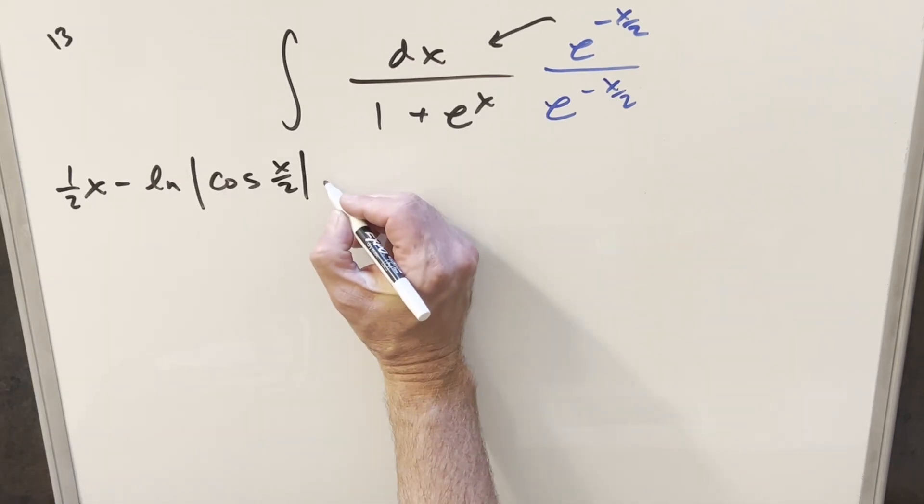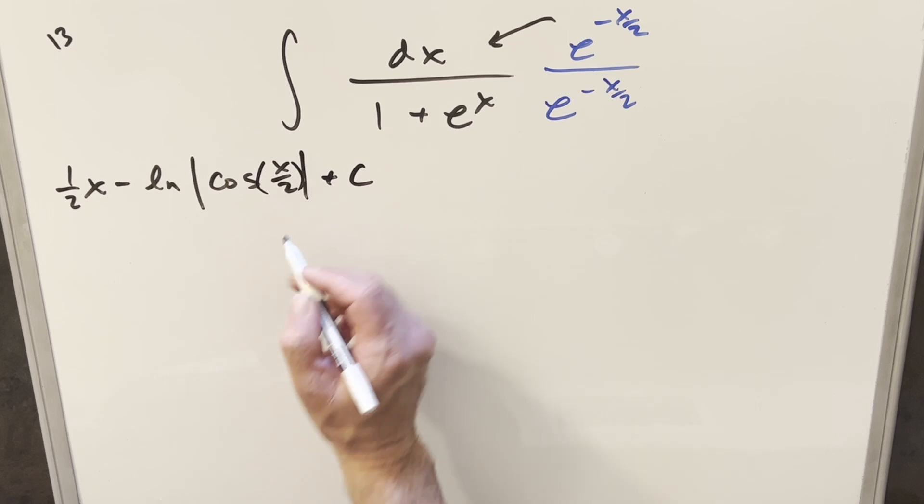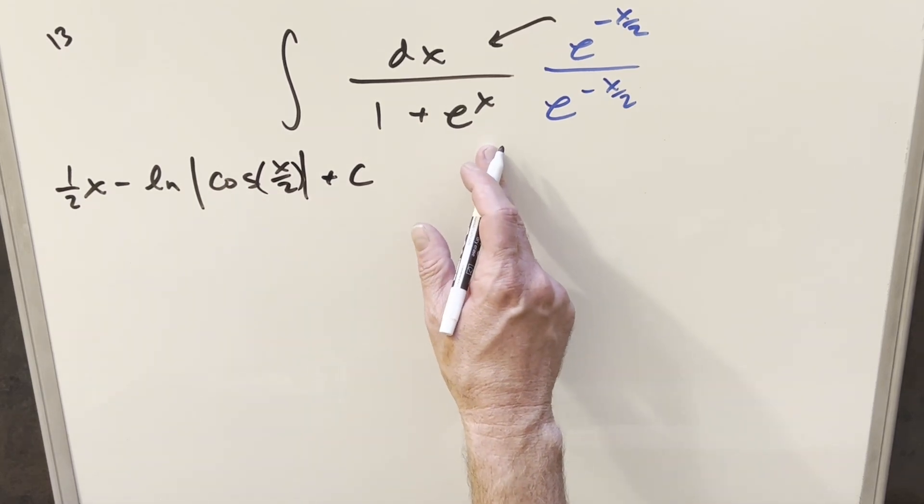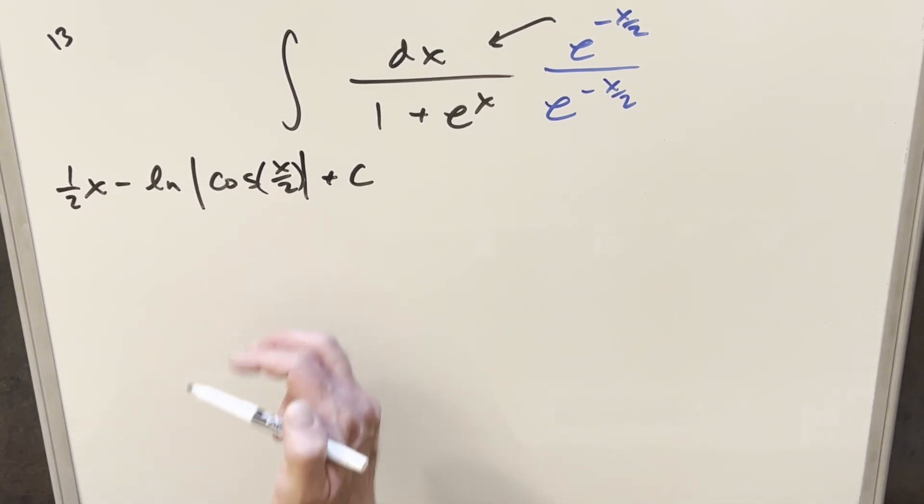And now at this point, this is a fine solution. We could add a plus c on here and call it good. But what I want to do is actually let's get it back into the single angle, just because I feel like it. And that's probably what you'd get if you did it by normal methods. You'd get it back when you just have a single x. So let's see if we can manipulate this.